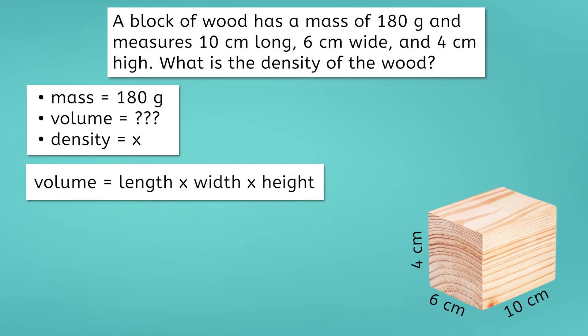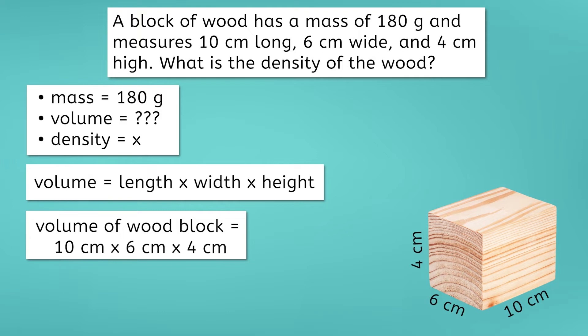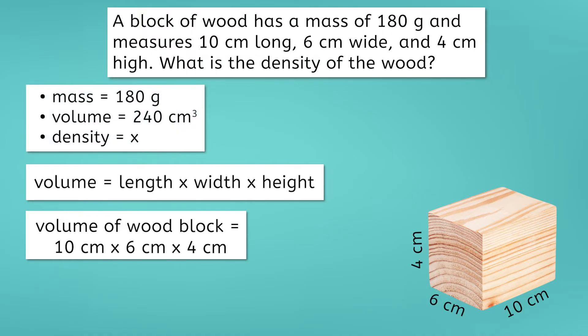Are we given the volume of the wood block? Well, not quite. We weren't given the volume, but we were given the dimensions of the wood block, which allows us to calculate the volume. Remember, the volume of a rectangular prism is equal to its length multiplied by its width multiplied by its height. So, in this case, the volume is equal to 10 centimeters times 6 centimeters times 4 centimeters. This equals 240 centimeters cubed. We can now add that to our list next to volume.